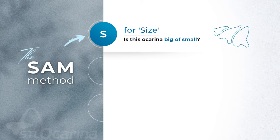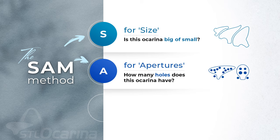The first element is Size, which focuses on the ocarina's physical dimensions and significantly influences sound and playability. Next is Apertures — counting the number of holes on the ocarina is vital, as these apertures determine the ocarina's range and playable notes.